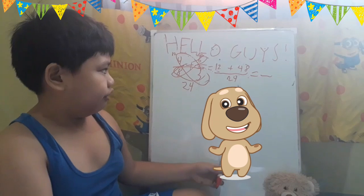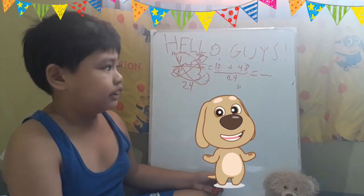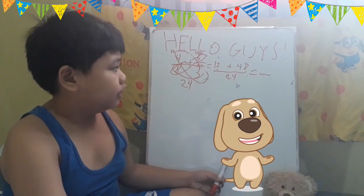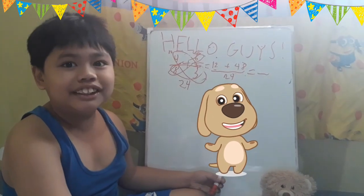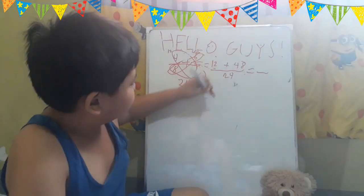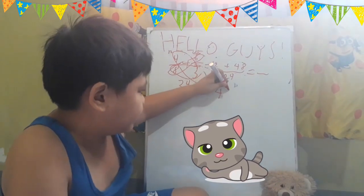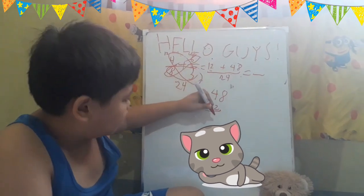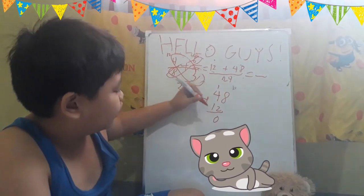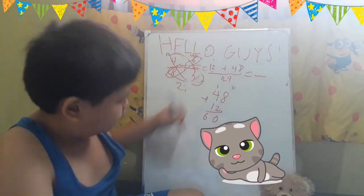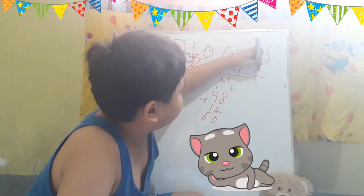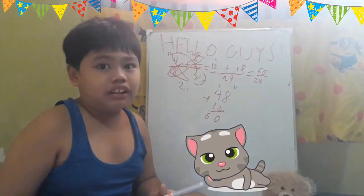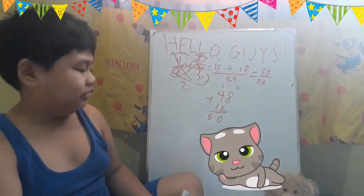Twelve plus forty-eight — you write it first. Twelve plus forty-eight equals sixty. Is sixty over twenty-four the final answer? No. Can you simplify it? Yes.